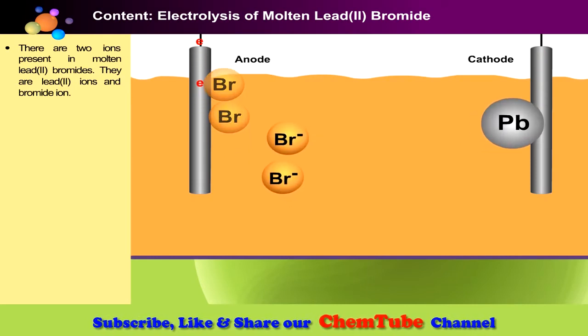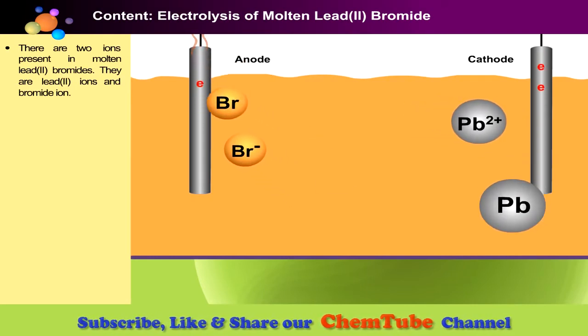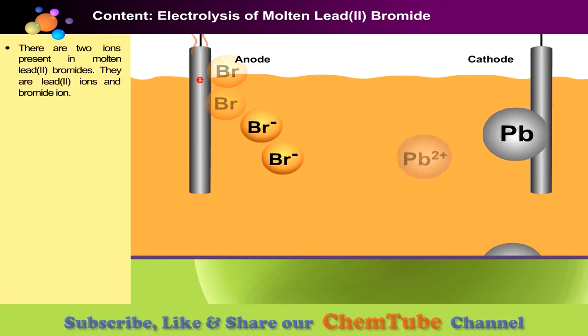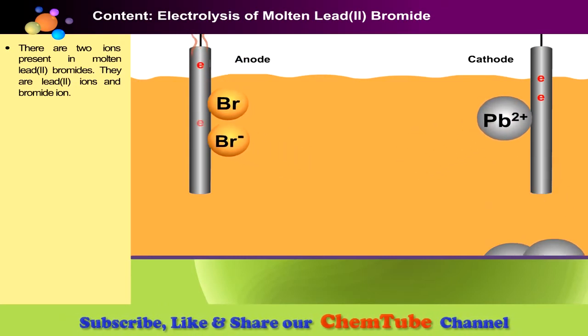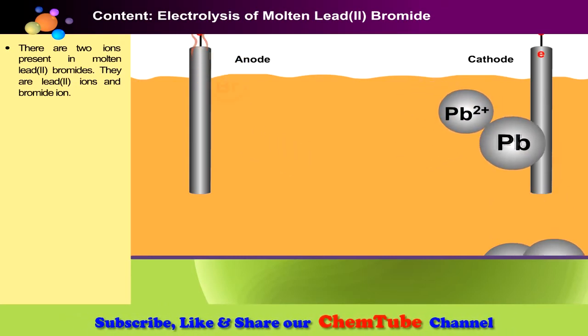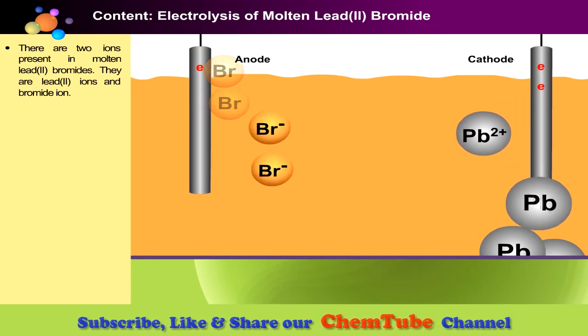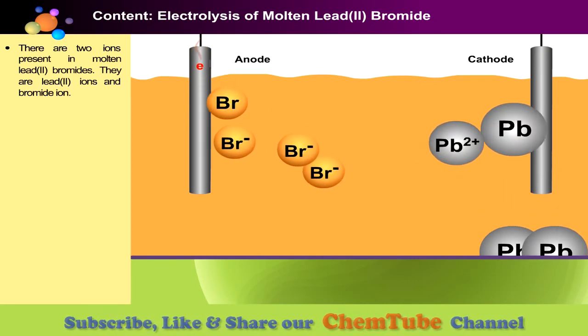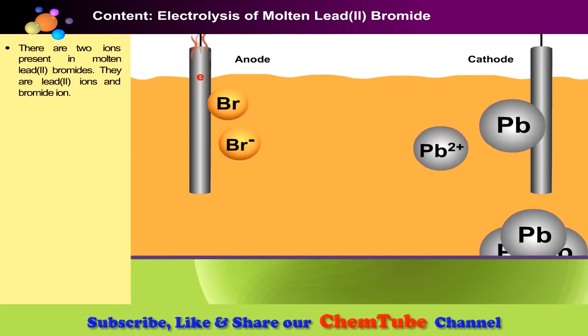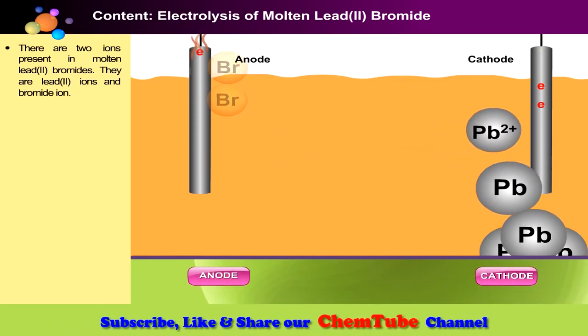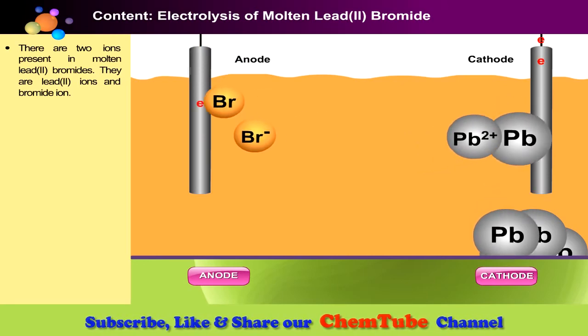When the switch is closed electric current passes through the ions. Negatively charged ions or anions, that is bromide ions, move towards anode. And at the same time the positively charged ions or cations, that is lead(II) ions, move toward cathode. Click on the anode and cathode button for a close-up view.